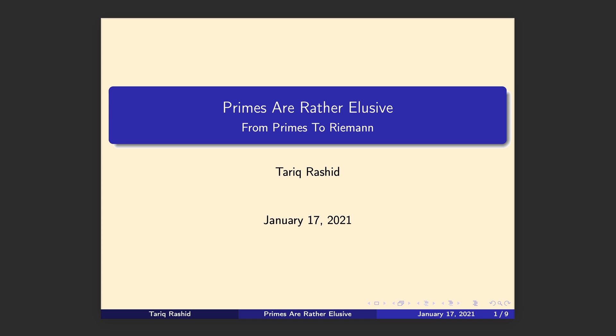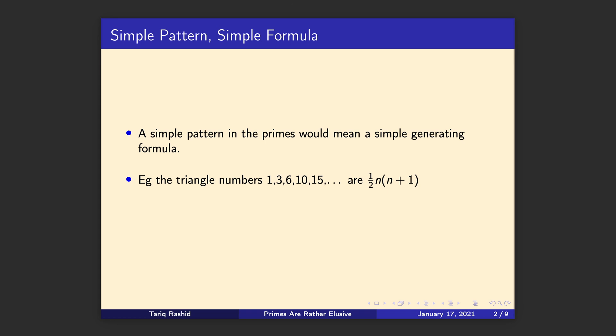Today we're going to take a slight diversion and follow an interesting question that newcomers like myself to primes often ask. We've seen in earlier videos that the primes appear to be almost randomly placed on the number line. It seems difficult to predict where the next one will be given the previous primes. That's another way of saying it's not easy to find a simple pattern.